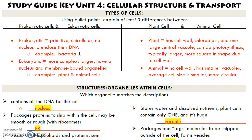Eukaryotic cells — the way you can remember that is that you are eukaryotic. You're more complex, you're larger, and you have a nucleus in all of your cells. You have a lot more complicated organelles as well. So all plants and animal cells are eukaryotic.